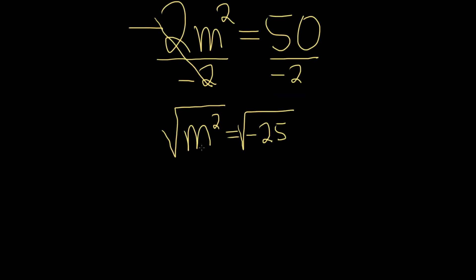When you do that, when you take the square root and you have a variable squared, you drop the 2, you drop the square root, and then on the other side, you put a plus or minus. So plus or minus, and then the square root of 25 is 5, but we have the negative here. That's going to give us an i.